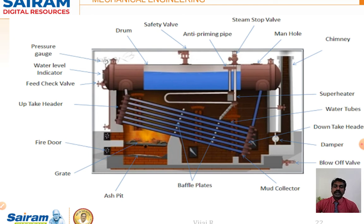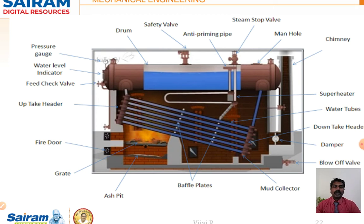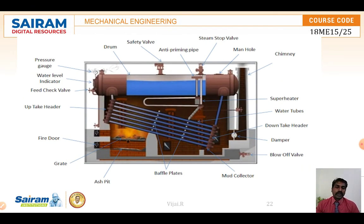The water inside the tubes gets heated up, steam is generated, and the hot steam automatically moves upward through the uptake header, settling at the top of the boiler drum. At the top of the drum there are safety valves, a steam stop valve, and a manhole. A pressure gauge and water level indicator are also present, and the steam is transferred to the turbine through a pipe, causing it to rotate.